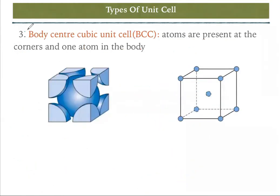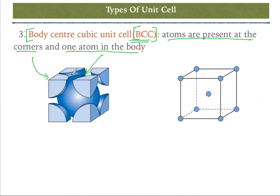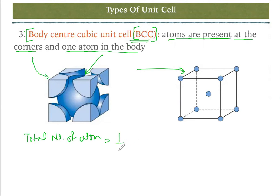The next type is the body-centered cubic unit cell, or BCC. Atoms are present at the corners — eight corners — and one atom is at the body center. You can see in the picture that the body-center atom is completely inside the cube. To calculate: each of the eight corners contributes one-eighth, giving one, plus one body-center atom, for a total of two atoms in BCC.